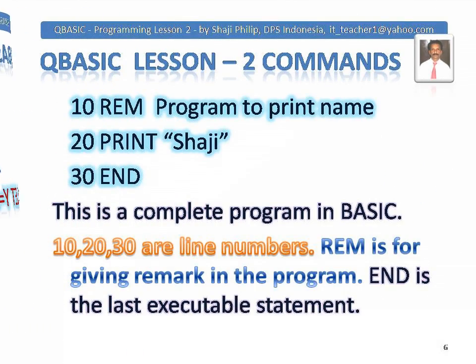Here we have a short program in QBasic language. Line 10: REM — program to print name. The first statement indicates this program is to print a name. In the second statement, line 20: PRINT Shaji — this will print the text or string 'Shaji'. The 30th statement is END. So this is a small program just to print a name or string. A string means a string of characters. 10, 20, 30 are the line numbers, given in a sequence, preferably in steps of 10.